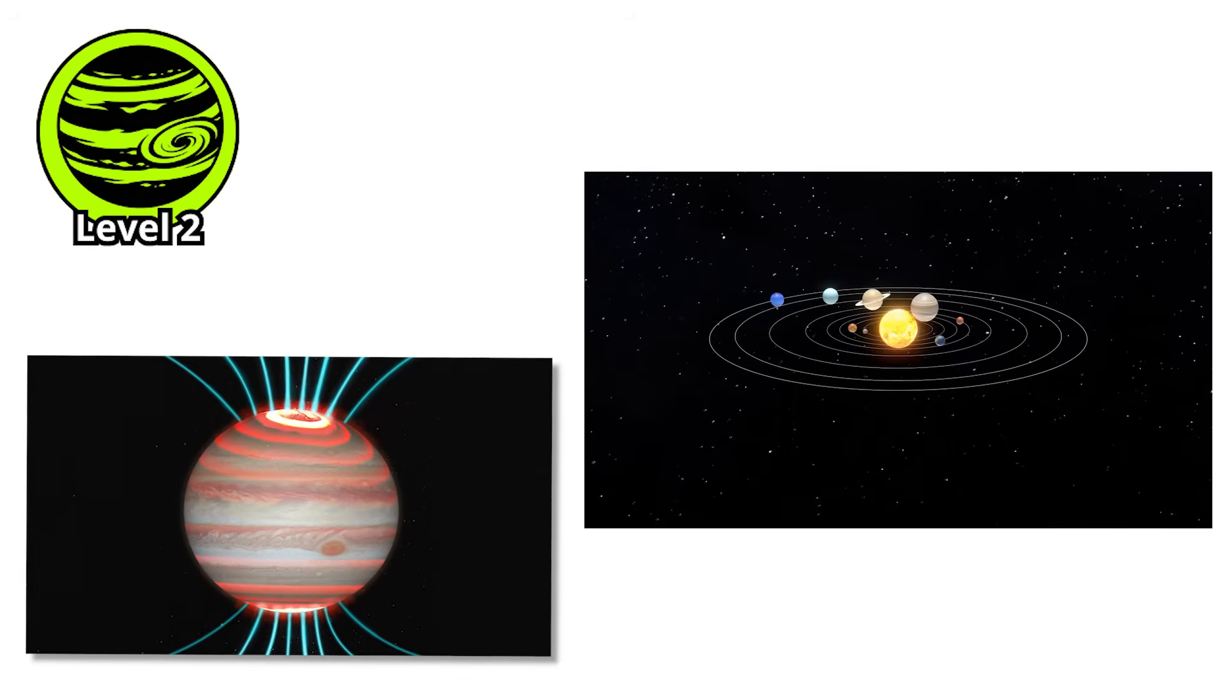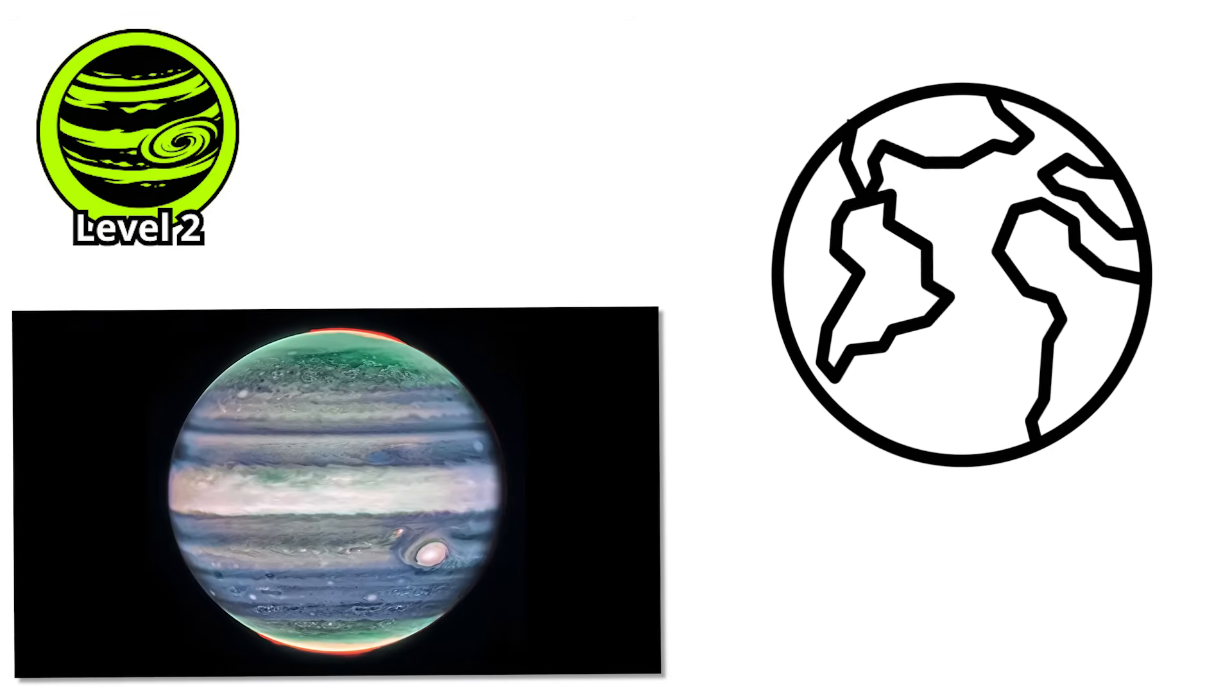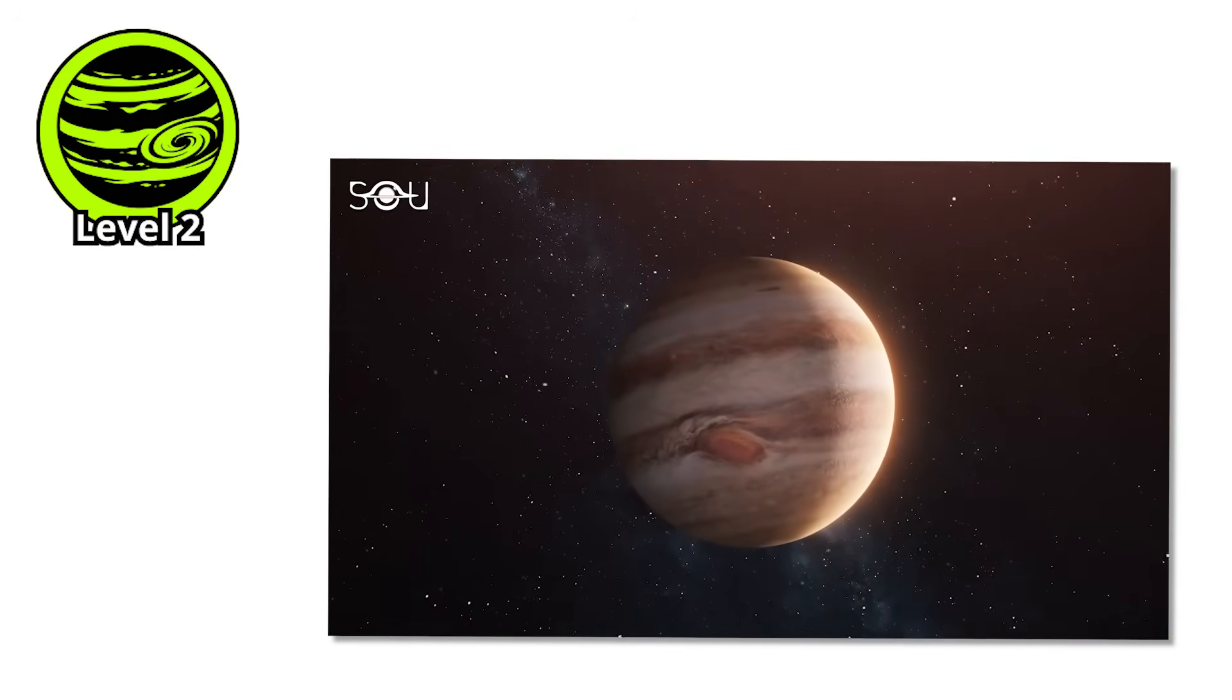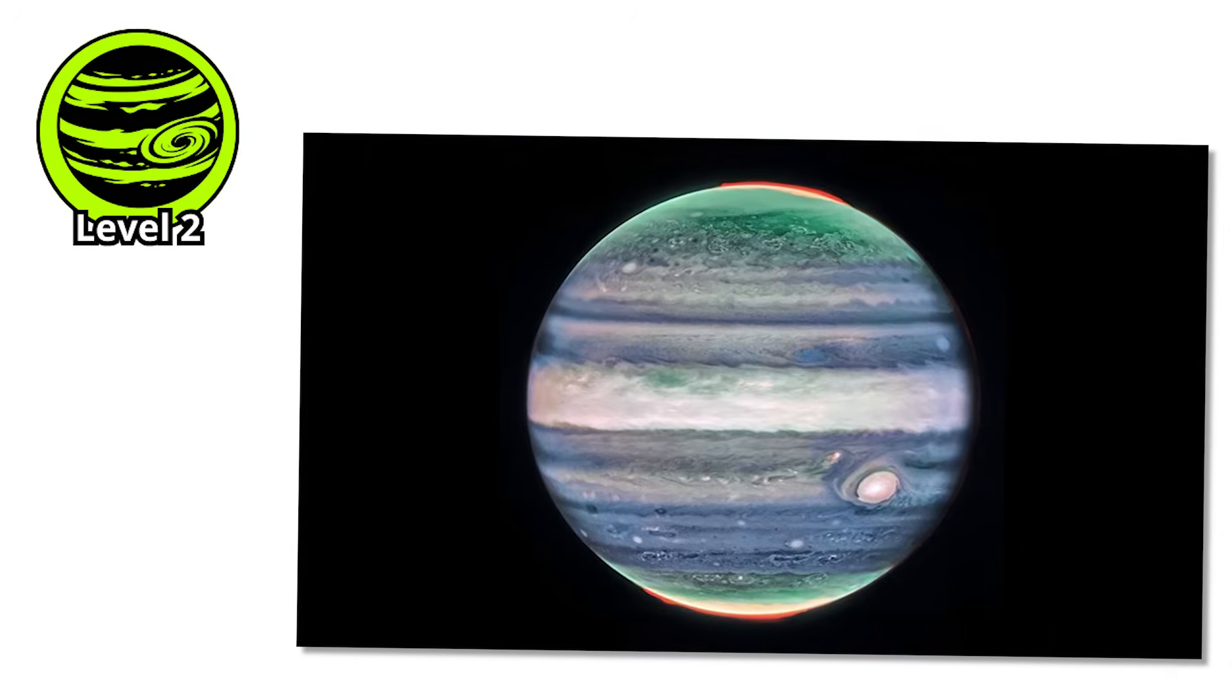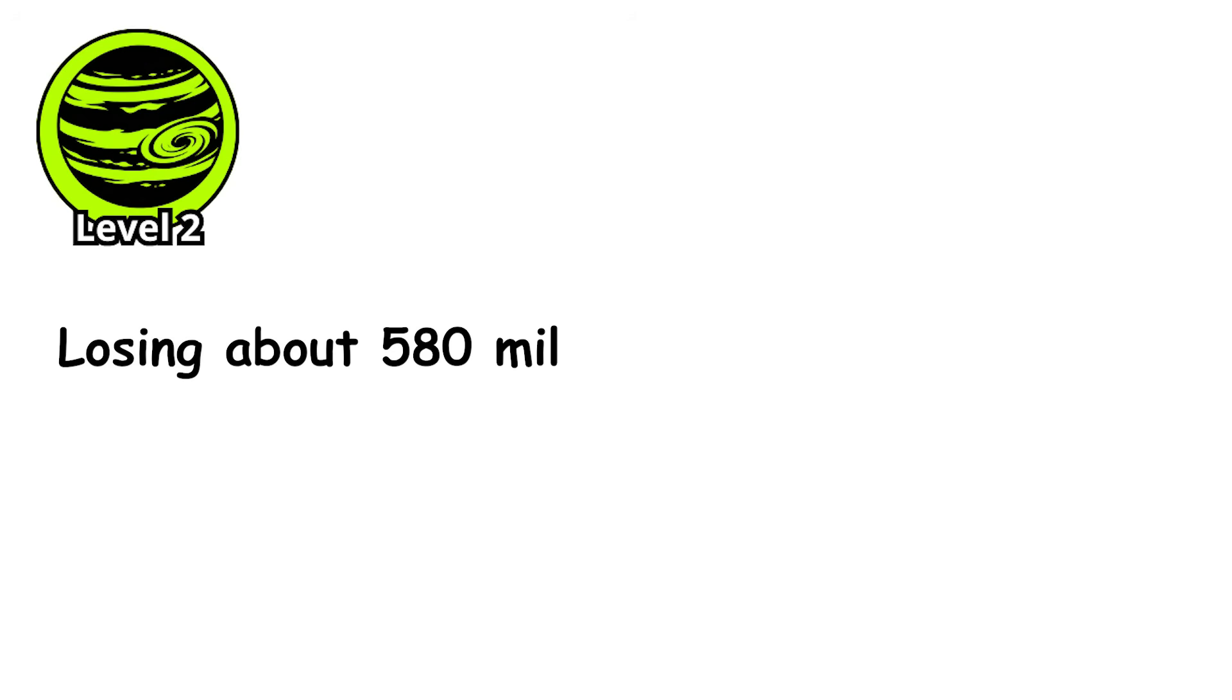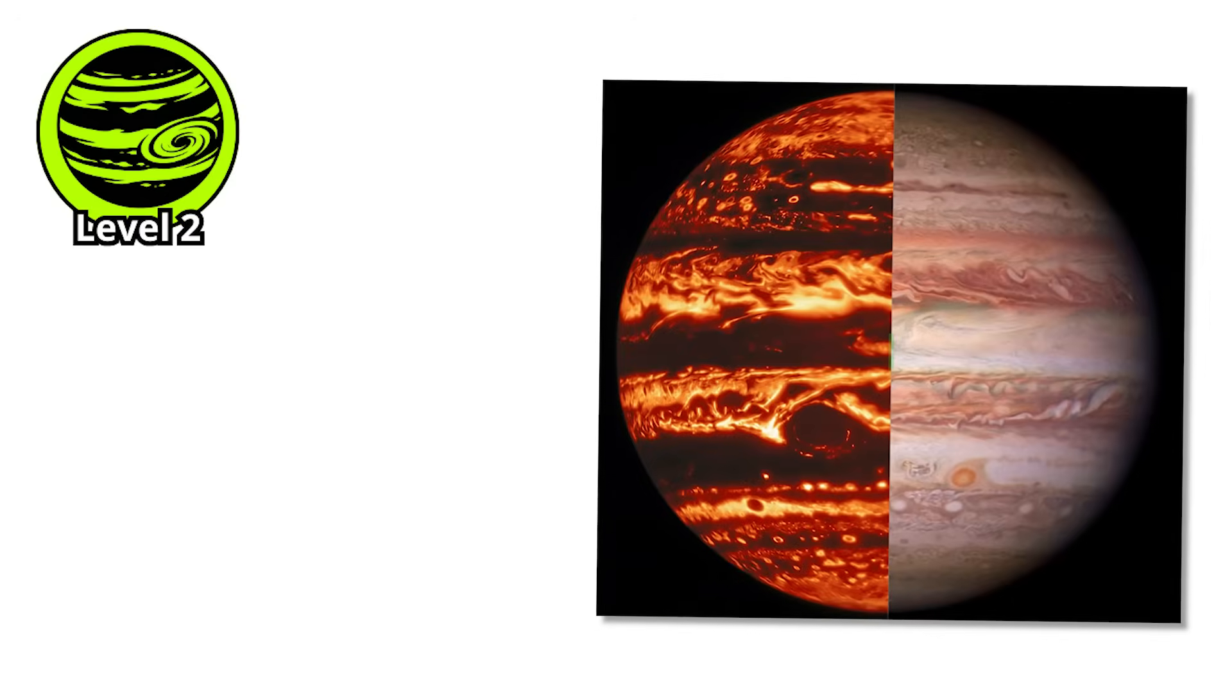This internal heat, combined with the planet's rapid rotation—Jupiter's day is only 10 hours long—creates jet streams that would make Earth's look like gentle breezes. The storm itself is an anti-cyclone, a high-pressure system, which is the opposite of hurricanes. It rises above the surrounding cloud deck like a massive, swirling mountain of gas. But here's the unsettling part: it's shrinking. Observations over the past centuries show the Great Red Spot is getting smaller, losing about 580 miles in diameter each year. We might be watching a 350-year-old storm die in real time.